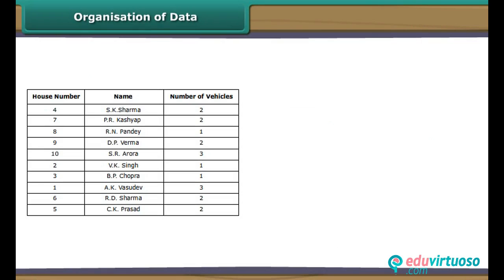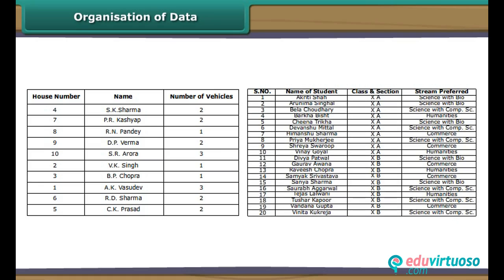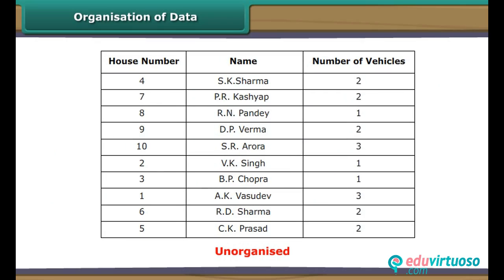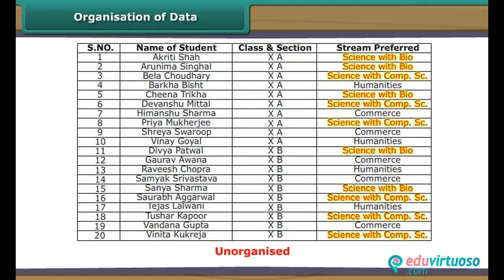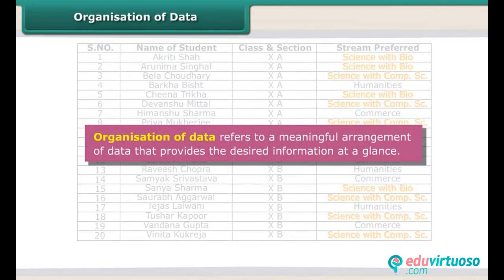Organisation of Data: The data collected by the RWA and the data provided by Sheetal to the academic in charge are unorganised. The former does not tell the RWA at one glance the number of residents who own more than one vehicle. Similarly, the latter does not tell the academic in charge at one glance the number of students who have opted for science.